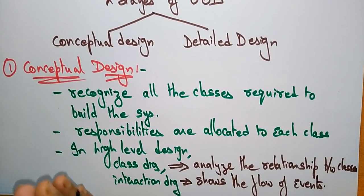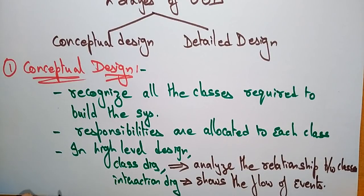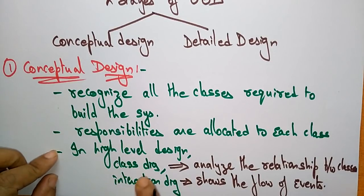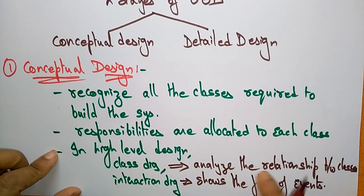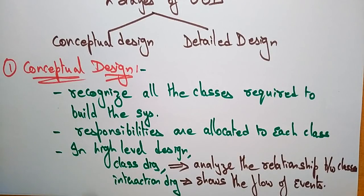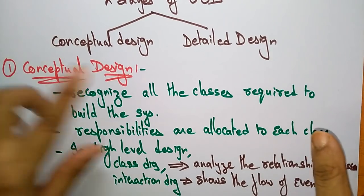In object-oriented design, conceptual design always uses high-level designs. In conceptual design, two diagrams are used: the class diagram and the interaction diagram. The class diagram analyzes the relationship between the classes, whereas the interaction diagram shows the flow of events — after one interaction, what is the next step, and so on.